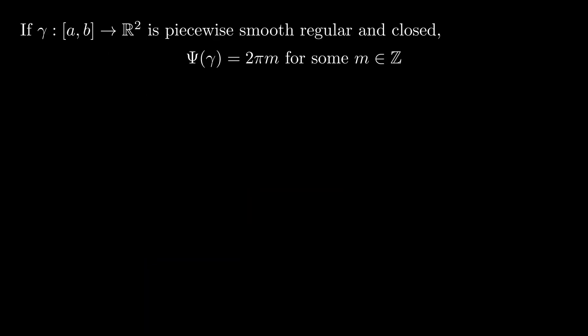By now you may have noticed that if a curve is closed, then its total signed curvature has to be a multiple of 2π. That is of course because the final direction equals the initial direction.